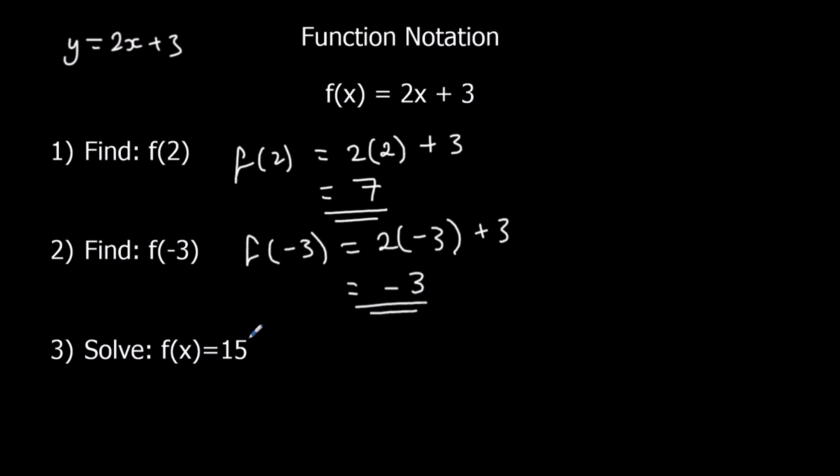And solve f of x equals 15. So if the output's 15, what's the input? What did we put in to get 15 out? So 2x plus 3 equals 15. What's x? Take away 3 from both sides. 2x is 12, and then divide both sides by 2. So that tells us x is 6.